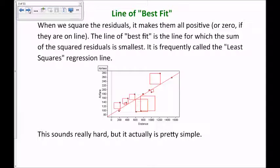Now, if we take those residuals and square them, it makes them all positive — or zero if they're exactly on the line. The line of best fit, as we define it, is the line for which the sum of the squared residuals is smallest. That'll overemphasize points that are really far from the line and underemphasize those that are really close, and that gives us the line of best fit. It's frequently called the least squares regression line because we square all the residuals and want the line with the smallest sum of those squared residuals.